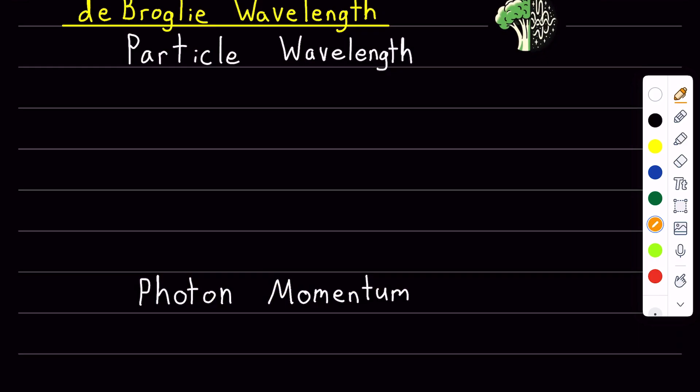Because particles can behave as waves, they have a wavelength called the de Broglie wavelength. The wavelength of a particle is given as lambda wavelength equals Planck's constant over momentum.